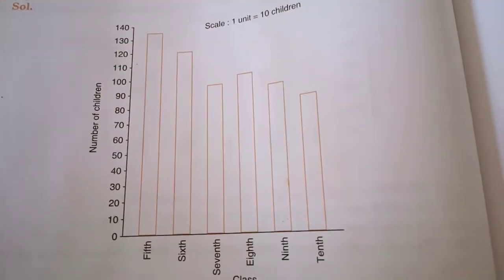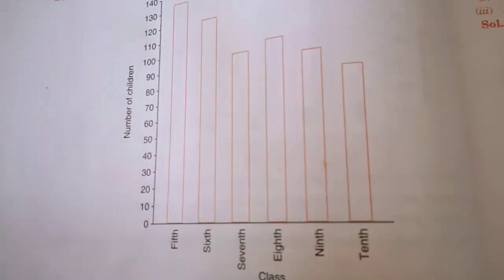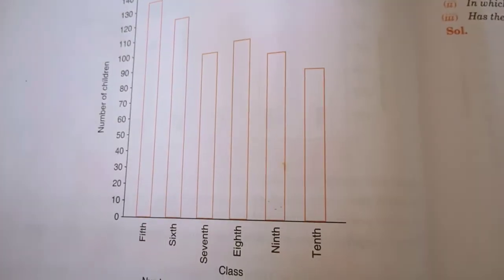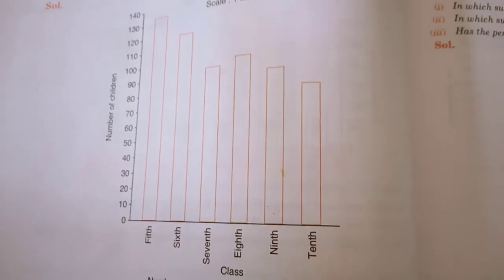In this way you make the remaining bars and that bar diagram will be completed. In tomorrow's session we will continue for the next examples from the same exercise. Your bar must look like this when you have completed. Remaining questions related to this we will continue in next period. Thank you.